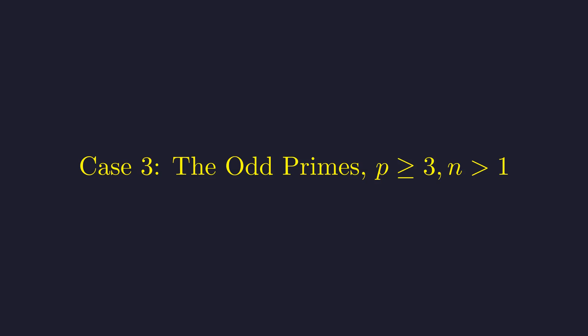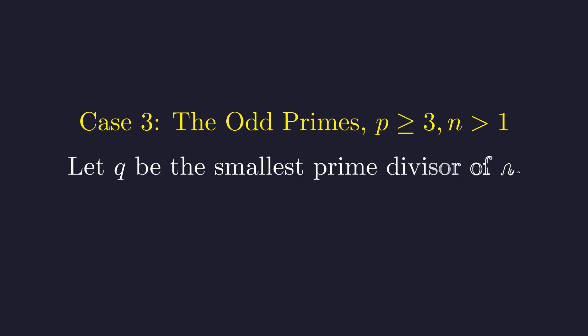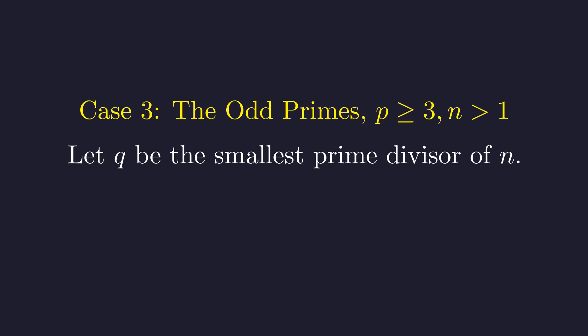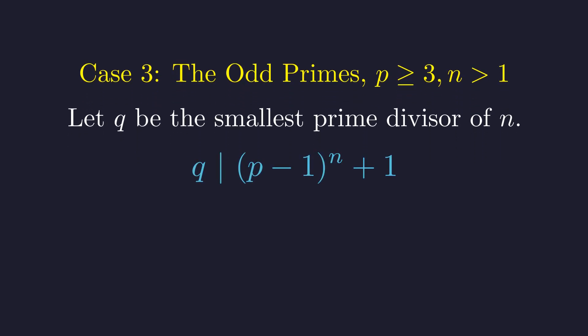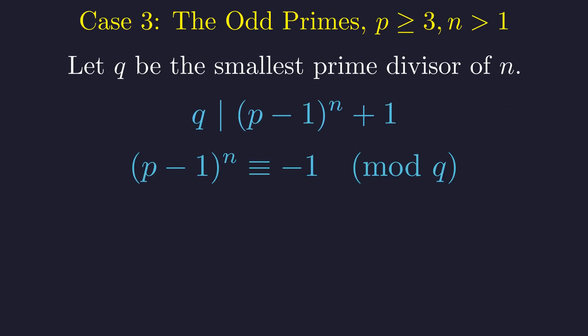Now we address the general case: p is an odd prime and n is greater than 1. Let q be the smallest prime divisor of n. This element is key to constraining the properties of n. So, q must divide (p-1)^n + 1. We can express this divisibility as a congruence: (p-1)^n ≡ -1 (mod q).